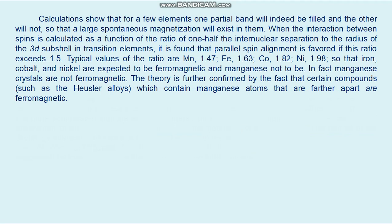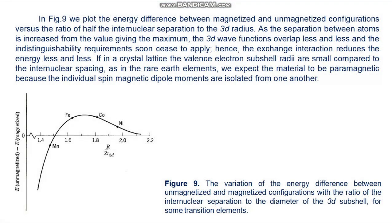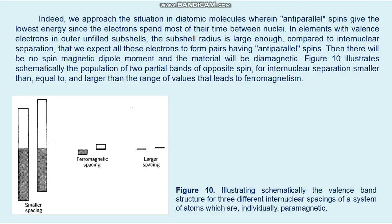When the interaction between spins is calculated as a function of the ratio of half the internuclear separation to the radius of the 3d subshell in transition elements, it is found that parallel spin alignment is favored if the ratio exceeds 1.5. We plot the energy difference between magnetized and unmagnetized configurations versus this ratio in figure 9. For elements where valence electrons are in outer filled subshells, the subshell radius is large enough compared to the internuclear separation that we expect all electrons to form anti-parallel spin pairs, resulting in no net spin magnetic dipole moment and diamagnetic behavior. Figure 10 illustrates schematically the population of two partial bands of opposite spin for internuclear separations smaller than, equal to, and larger than the range of values that leads to ferromagnetism.